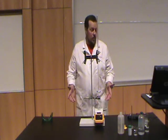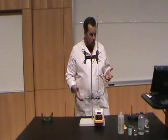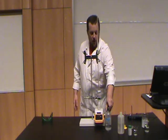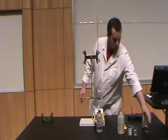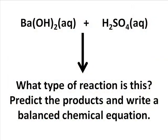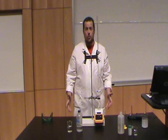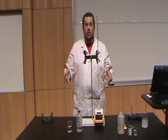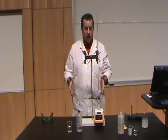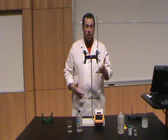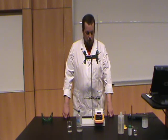Here is this week's experiment. We're going to be looking at the reaction of barium hydroxide with sulfuric acid. The process we're going to use is called titration. Titration is just a way to use the stoichiometry of a chemical reaction to let us determine the amount of one of those reactants that's present.